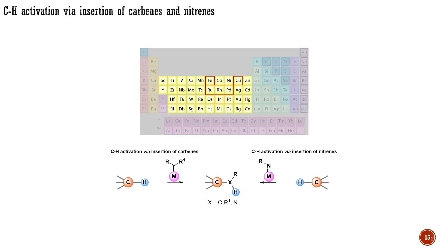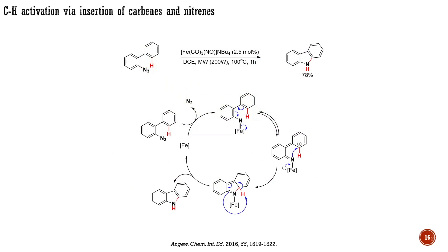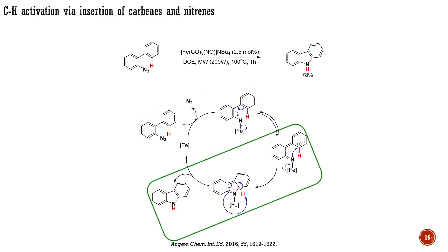Now let's consider the CH insertion of carbenes and nitrenes. Whenever you encounter azides or diazo compounds combined with late transition metals, you should think about the CH insertion of carbenes and nitrenes. The first example is an iron-catalyzed intramolecular CH amination of arenes by corresponding azides, published in 2016. The reaction was conducted under microwave irradiation, typical for diazidization reactions. In the first stage of the process, the substrate loses nitrogen and forms an iron-nitrene complex. It is proposed that the formed complex undergoes several electron shifts, as shown here, forming the carbazole and the active form of the catalyst.